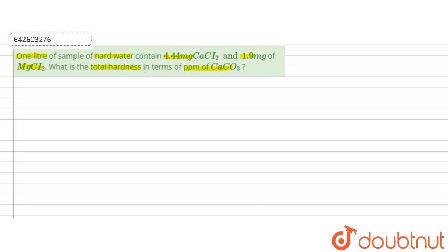In this question, one liter of hard water sample contains 4.44 milligrams of calcium chloride and 1.9 milligrams of magnesium chloride, and we have to calculate its total hardness in terms of ppm of calcium carbonate. Hardness of water is due to the presence of calcium and magnesium salts.